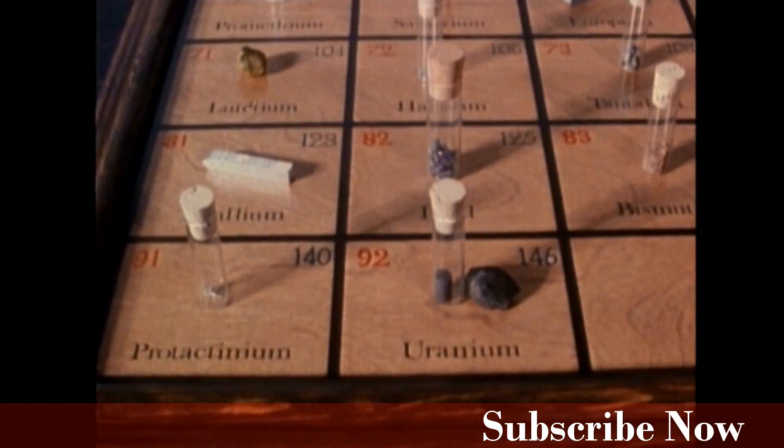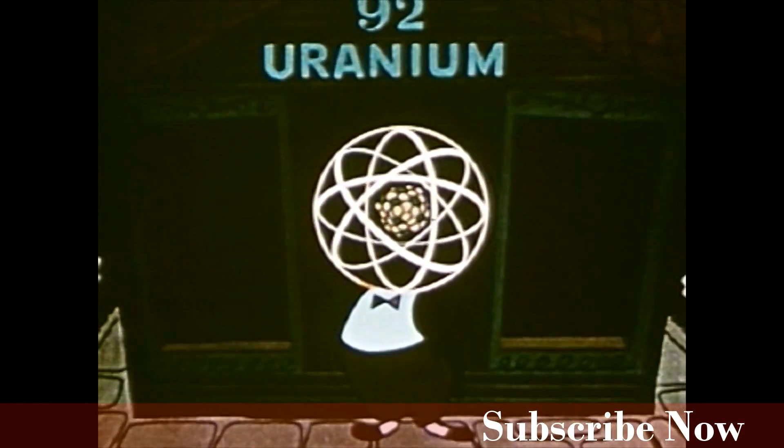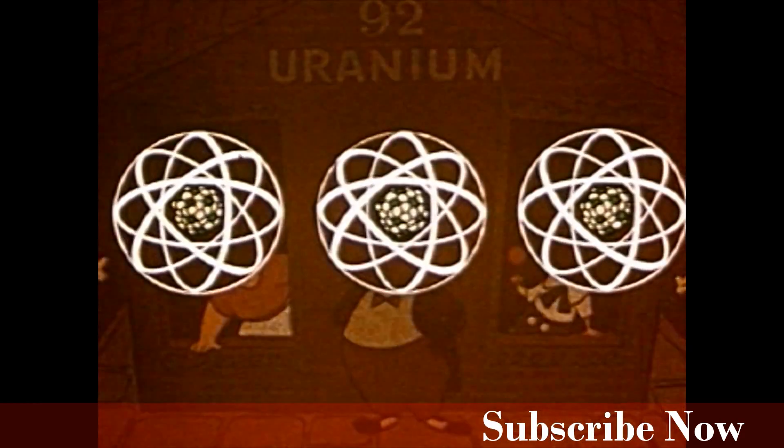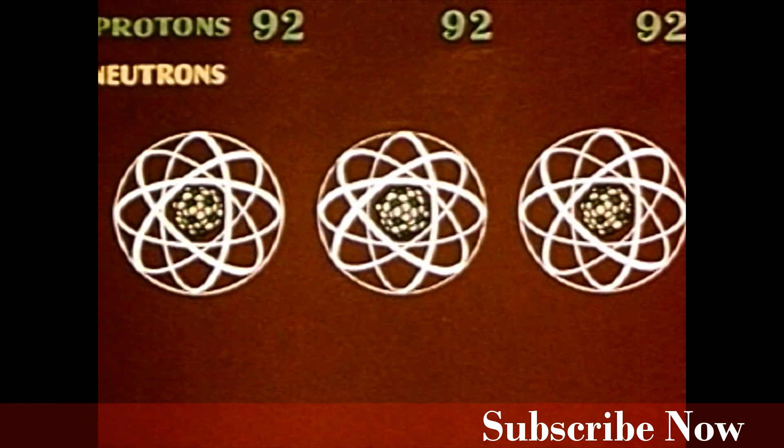For any given element, the number of protons must remain the same, but the number of neutrons may vary. The atomic weight of an atom is the number of protons plus the number of neutrons.